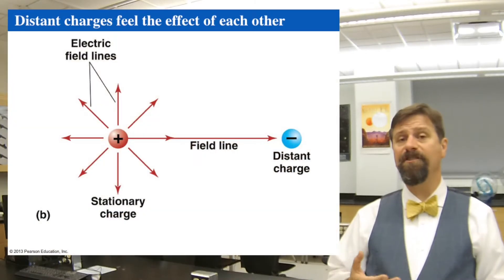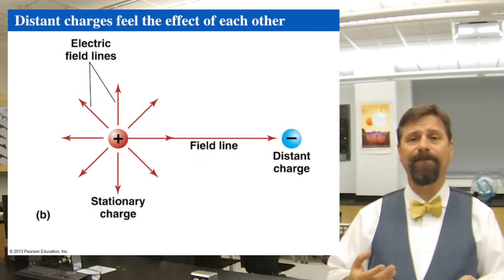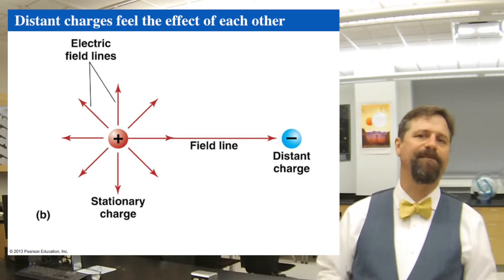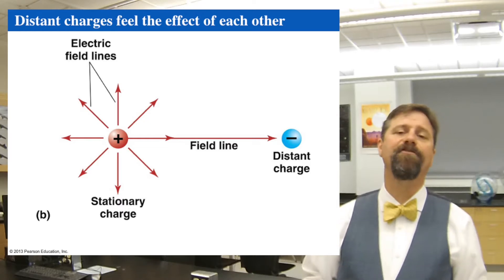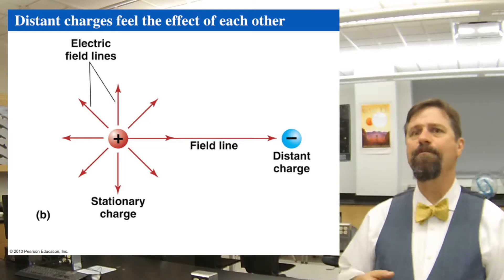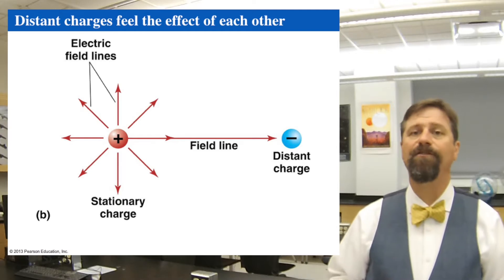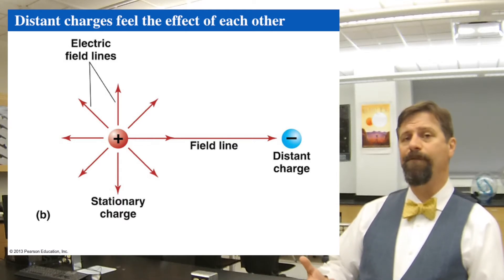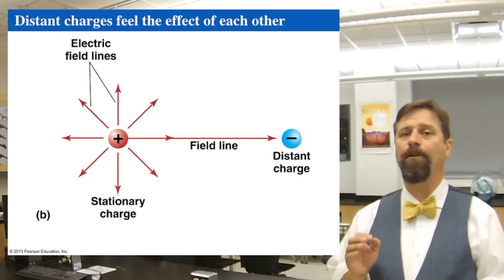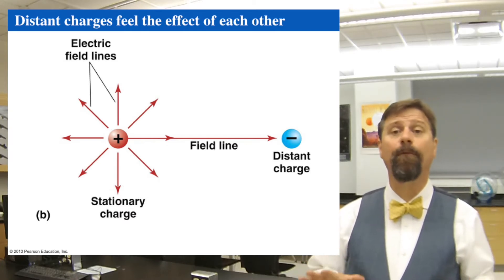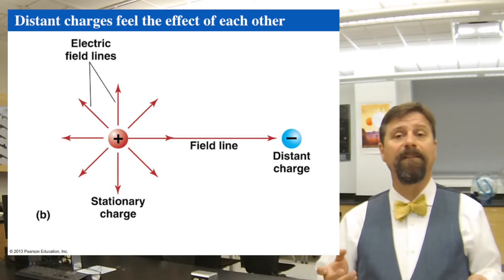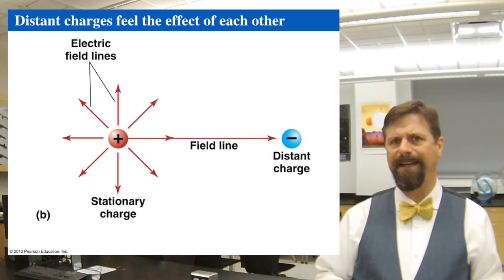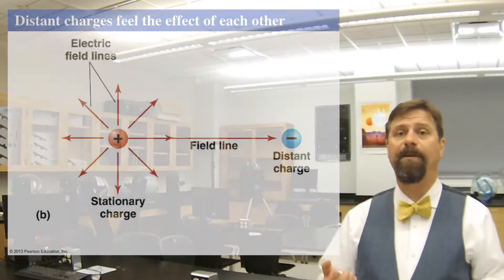So distant charges feel the effect of other charges through the electric field that they generate. Space is permeated by the electric field due to charges. And if they're all standing still, all these electric fields don't move. They're just sitting there. If everybody's held in place, they're all pinned down. Everything would be pushing on it, but they're pinned down so they can't move.